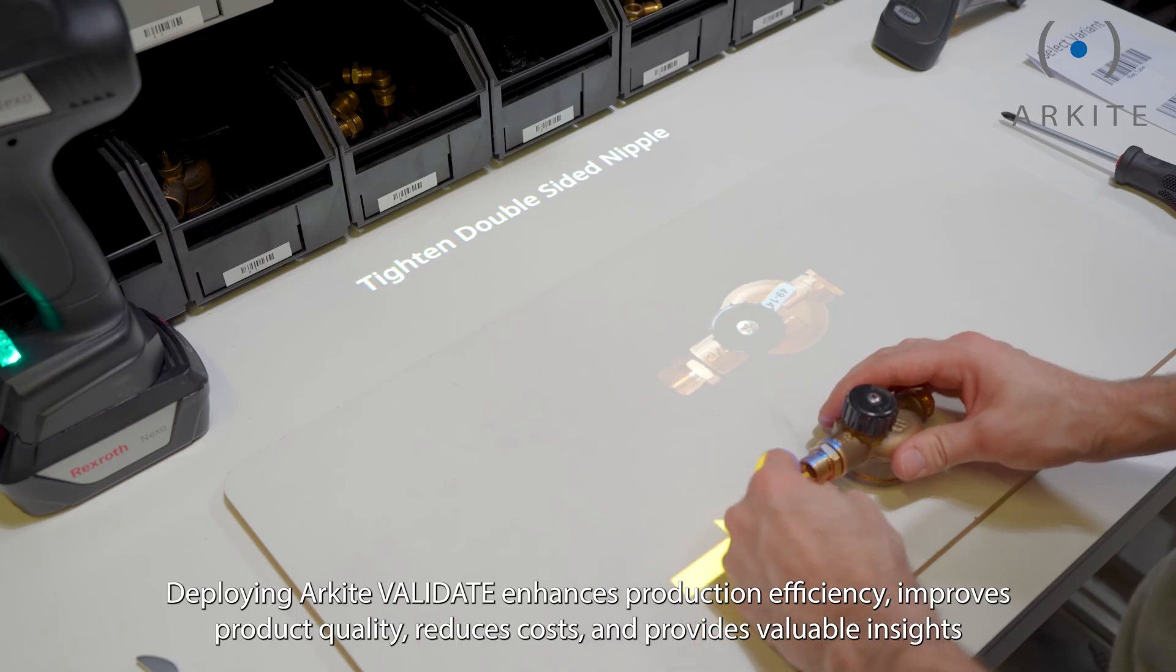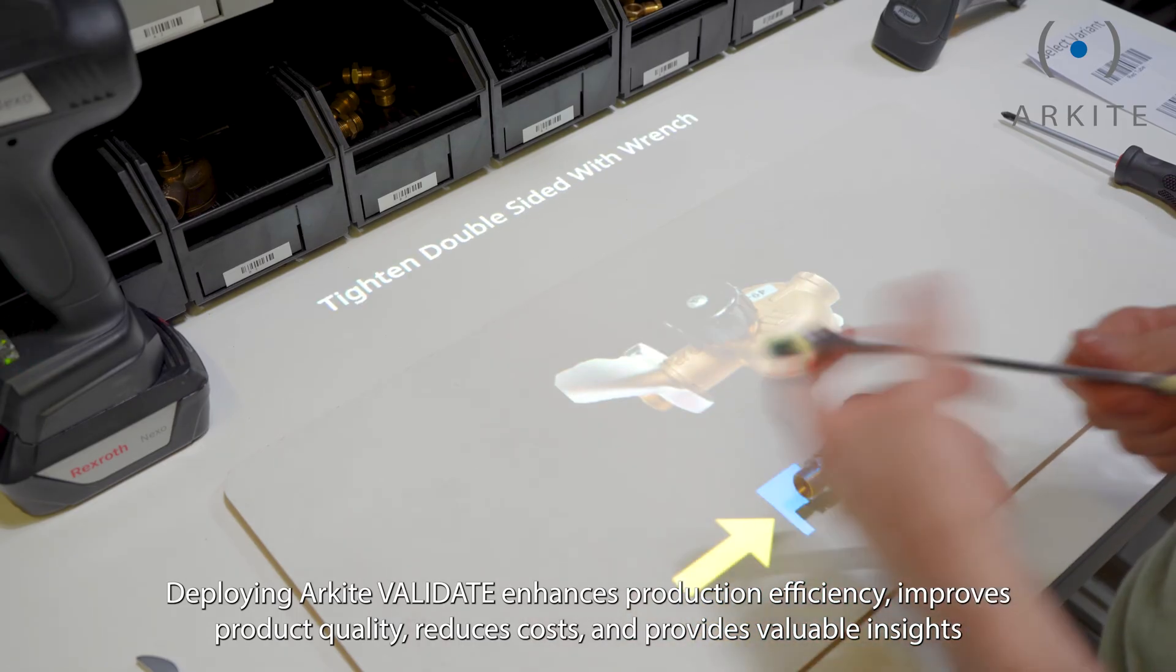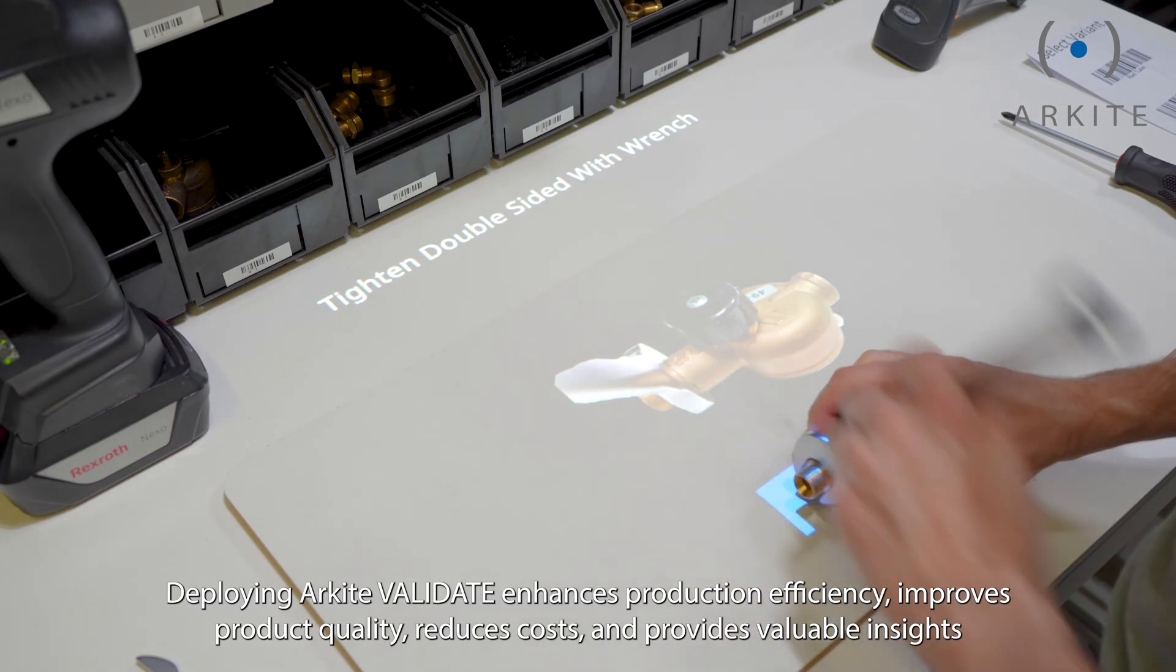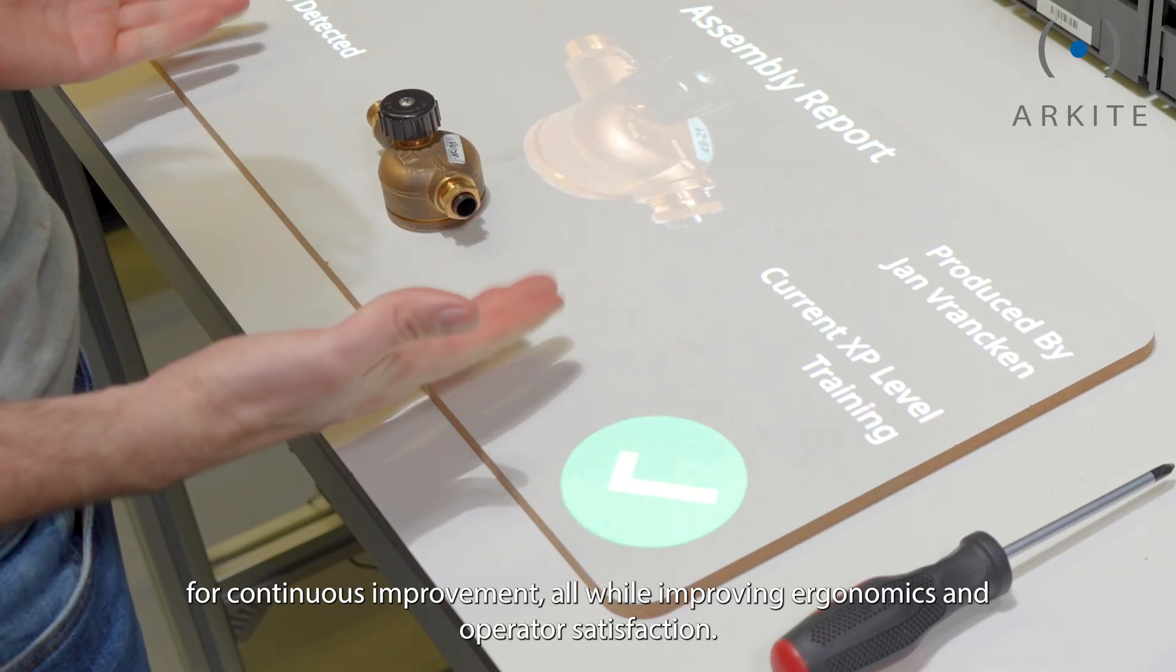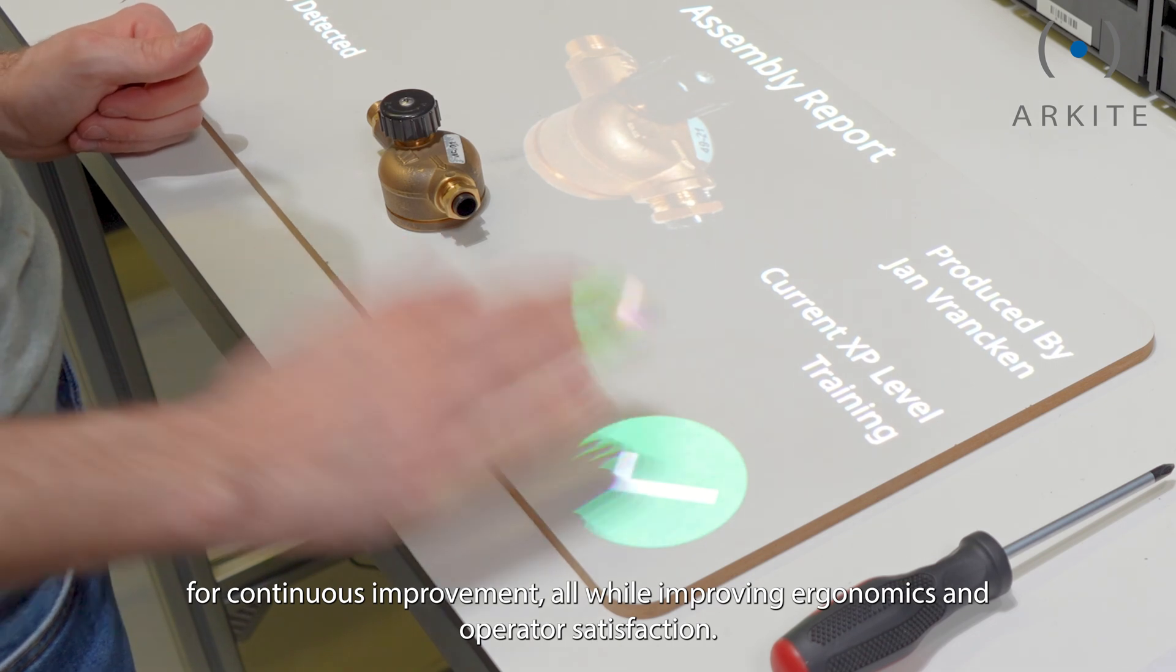Deploying Archite Validate enhances production efficiency, improves product quality, reduces costs and provides valuable insights for continuous improvement, all while improving ergonomics and operator satisfaction.